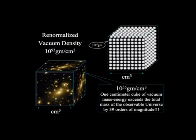Because the universe is approximately 10 to the 55th grams. So 10 to the 55th grams squeezed into a centimeter cube of space is still some 39 orders of magnitude smaller than the structure of the vacuum, the density of the vacuum.